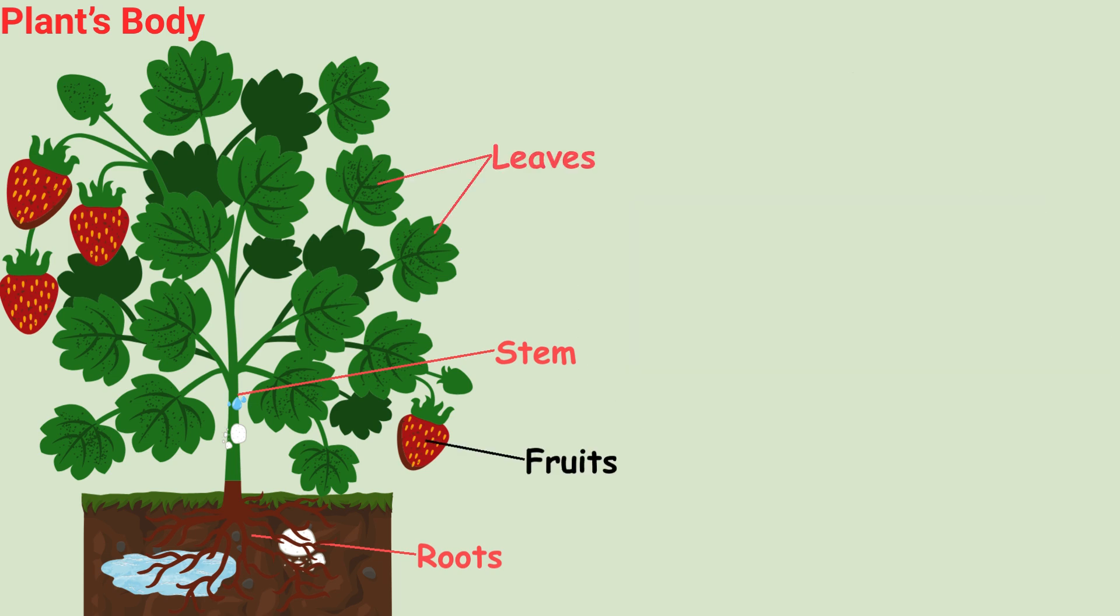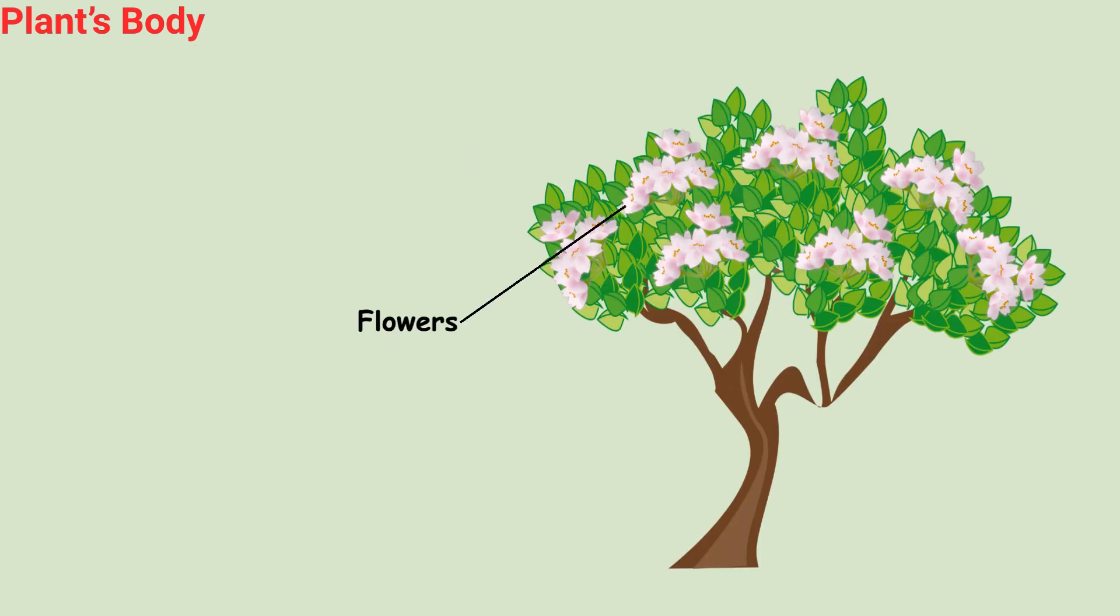Fruits and seeds. The plants' babies. Fruits protect the seeds, and seeds grow into new plants. Flowers. The colourful charmers. Flowers help the plant make seeds and grow into new plants.